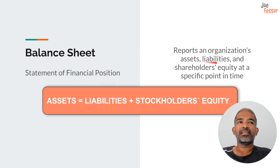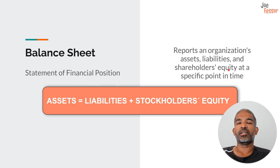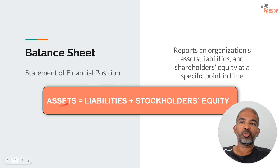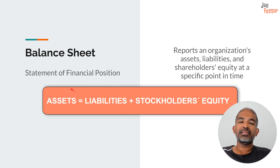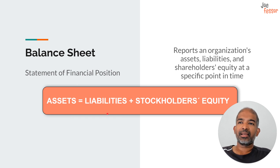The balance sheet is governed by the accounting equation, where the assets of a firm should be equal to the sum of their liabilities and stockholders' equity. Assets are everything a firm owns, and on the right side you see the sum of everything the firm owes to its lenders and investors. This accounting equation has to always stay in balance. We'll dive deeper into the different types of assets, liabilities, and equity from session two onwards.